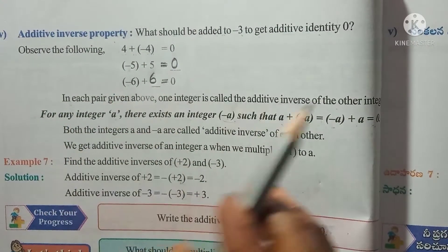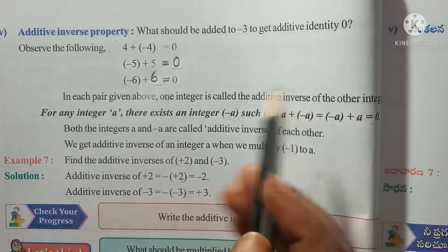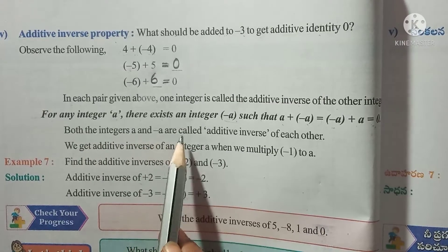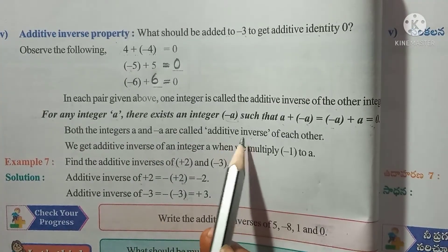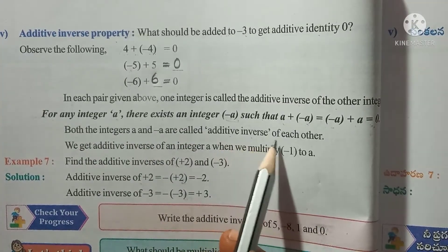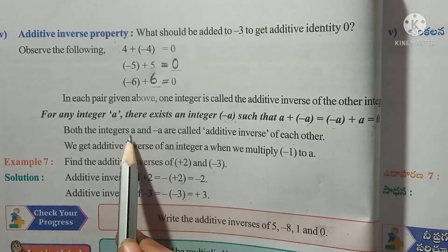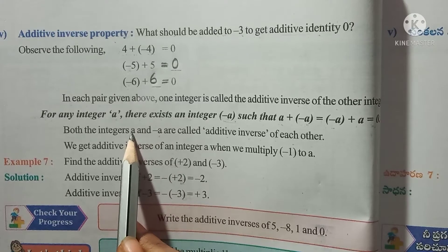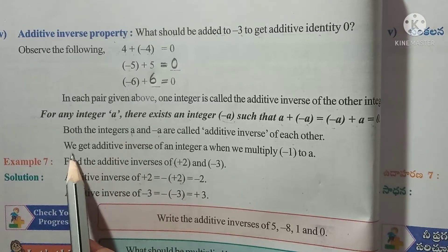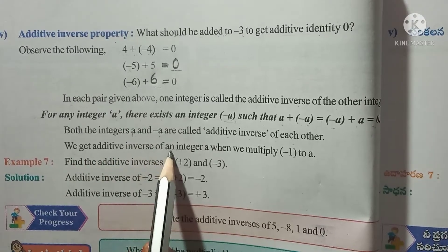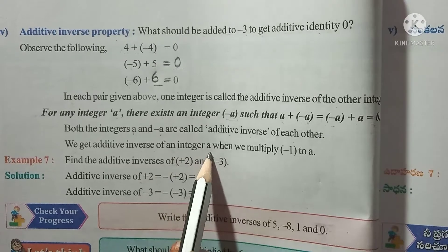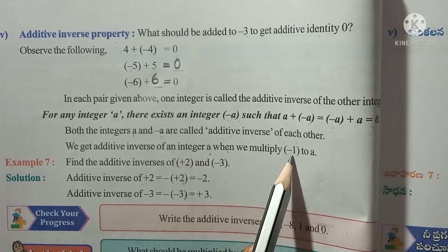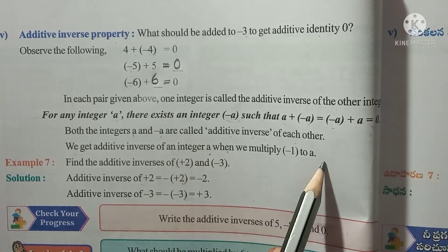Both a and minus a are called the additive inverse of each other. The additive inverse of a is minus a, and the additive inverse of minus a is a. We get the additive inverse of an integer a when we multiply minus 1 by a.